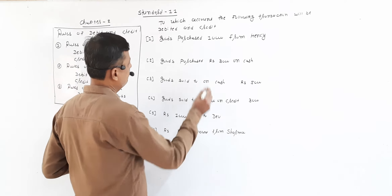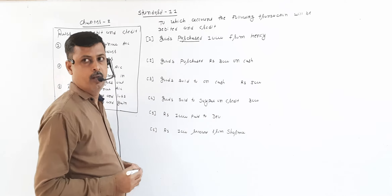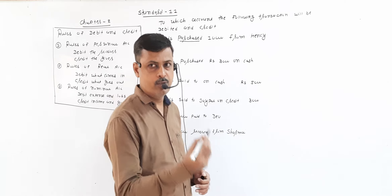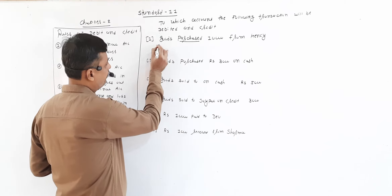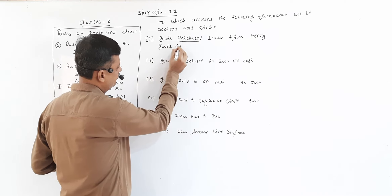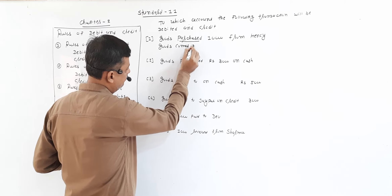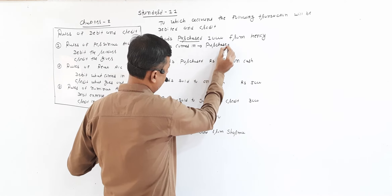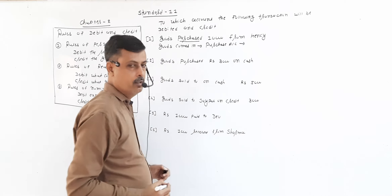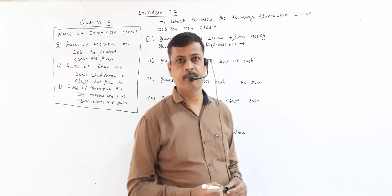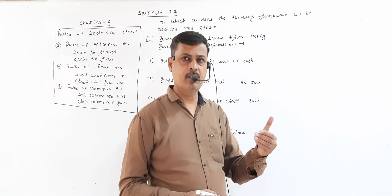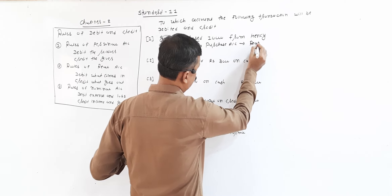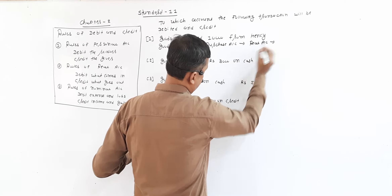Look at this word: goods purchased. Whenever we purchase goods, at that time goods come in. So there is an effect on the purchase account. Purchase of goods — goods is a real account, and purchase account is also a real account.